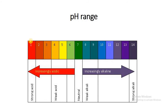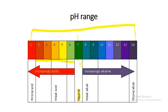The pH range is from 1 to 14. Here 7 is known as the neutral pH. If the pH is below 7 it is known as the acidic range, and if the pH is above 7 it is known as the basic or alkaline range. For example, 6 is a little acidic, 5 is a little more acidic, and 1 is the very strong acidic range. Similarly, 8 is a little alkaline, 10 is a little more basic, and 14 is strongly alkaline.